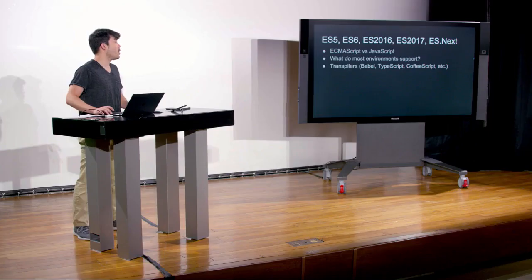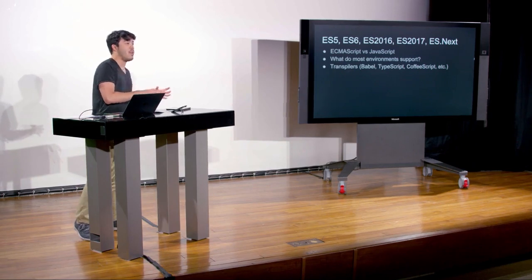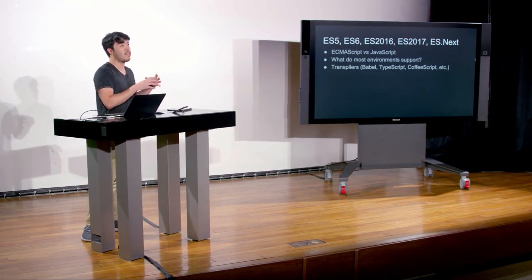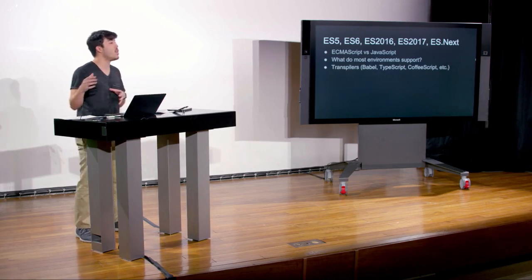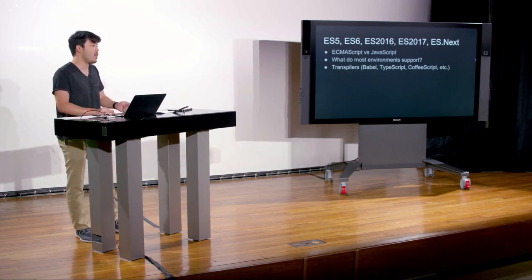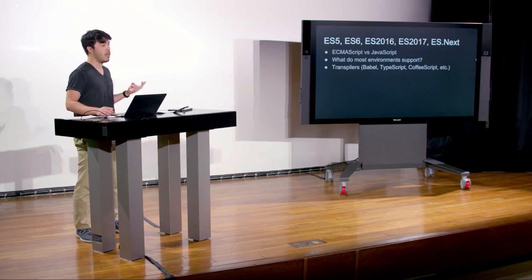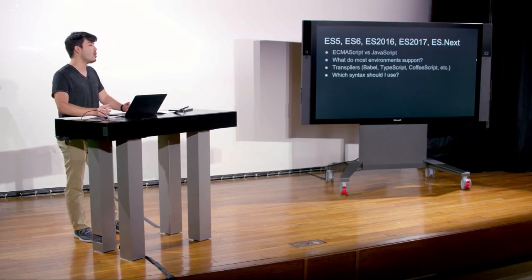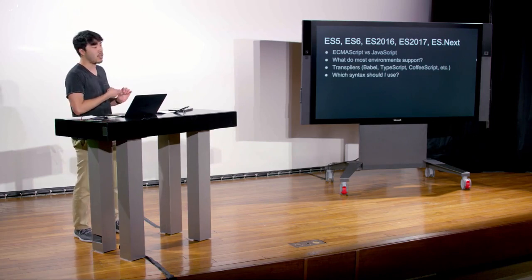What are we supposed to do about future language features? A big thing in JavaScript right now is what's called a transpiler. A transpiler takes newer language features and makes them backwards compatible with the ES5 spec. The most popular ones are probably Babel, but others include TypeScript or CoffeeScript. Generally, people use the future syntax because either environments will catch up, or we just transpile things back to ES5. In this course, we'll be using a lot of ES6 and beyond features.